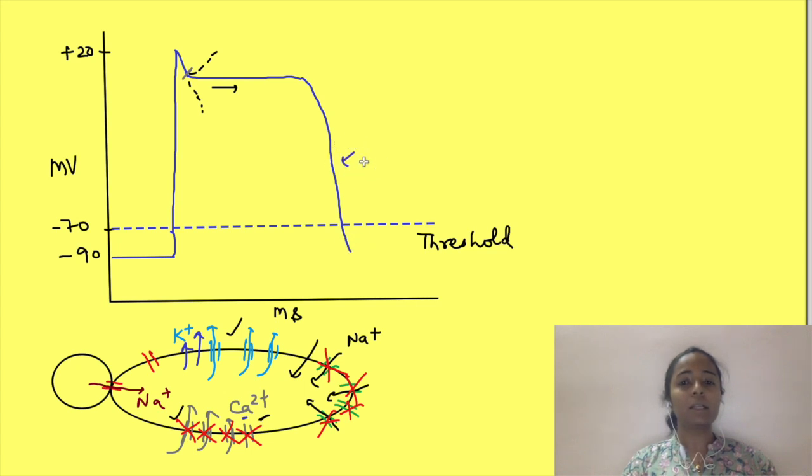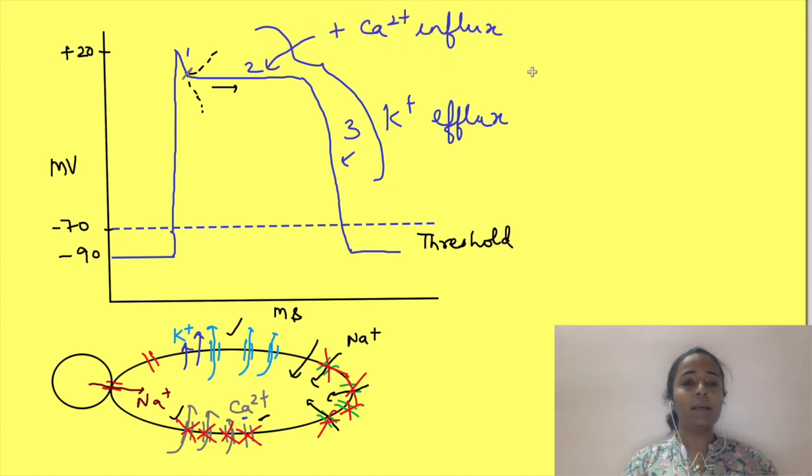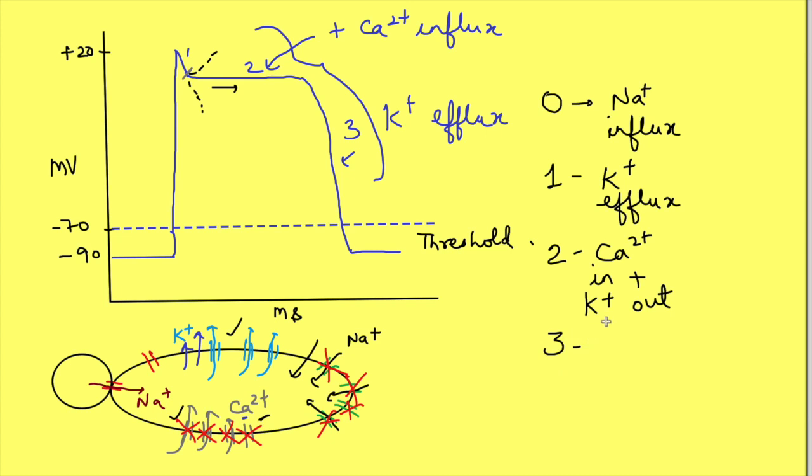This phase is delayed rapid repolarization. So in short potassium efflux continues throughout phase 1, 2 and 3 but is accompanied by calcium influx in phase 2. In summary phase 0 is due to entry of sodium, phase 1 due to exit of potassium, phase 2 due to balance between entry of calcium and exit of potassium, phase 3 due to exit of potassium and phase 4 is resting membrane potential.